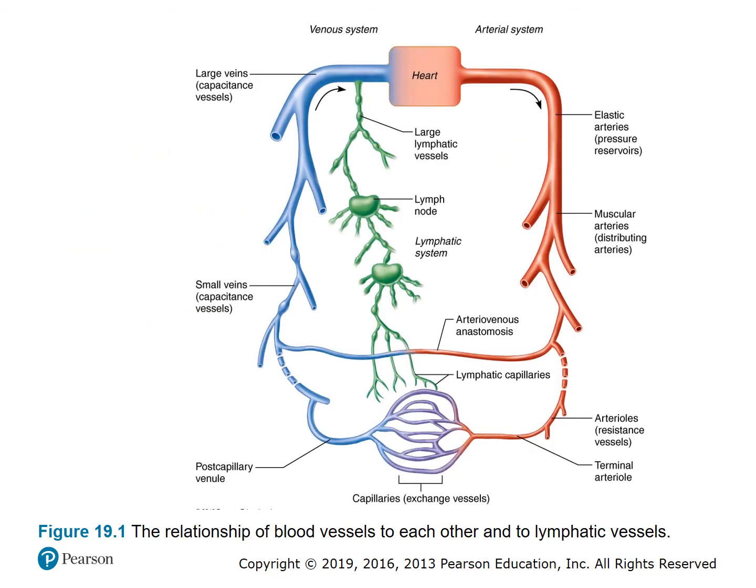Figure 19.1 shows the relationship of blood vessels to each other and to the lymphatic vessels. Blood comes to the right side of the heart via the large veins — notice there are also large lymphatic vessels that drain into those vessels. The right side of the heart pumps deoxygenated blood to the lungs, and then it comes back into the left side of the heart, which pumps oxygenated blood to systemic circulation.